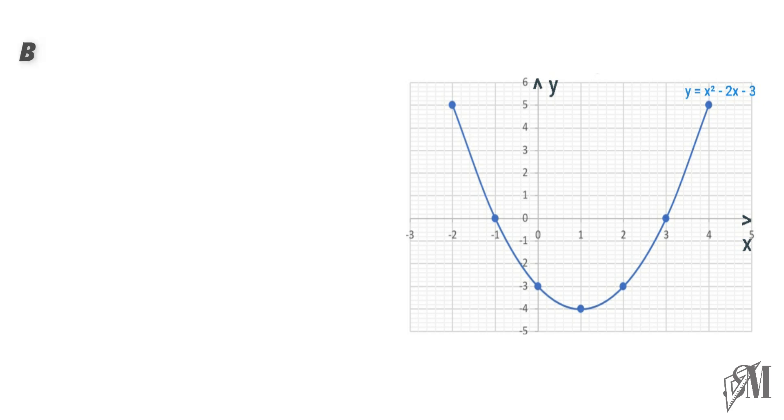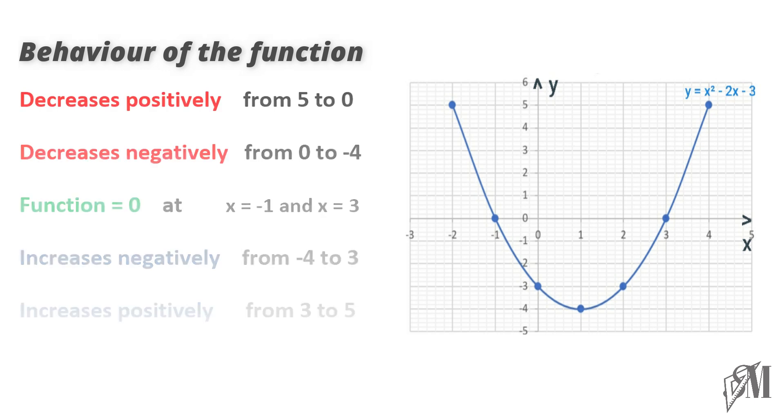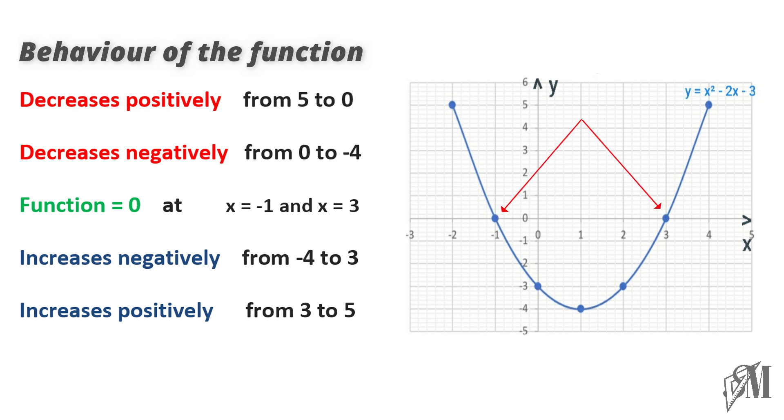When we discuss the behavior of the function, you can see when x increases from minus 2 to minus 1, y decreases from 5 to 0. Therefore we say the function decreases positively because there it is above the x-axis. Then it further decreases from 0 to minus 4 below the x-axis, that is decreasing negatively. At x equals minus 1 and x equals 3, the graph cuts the x-axis showing that the function is 0.